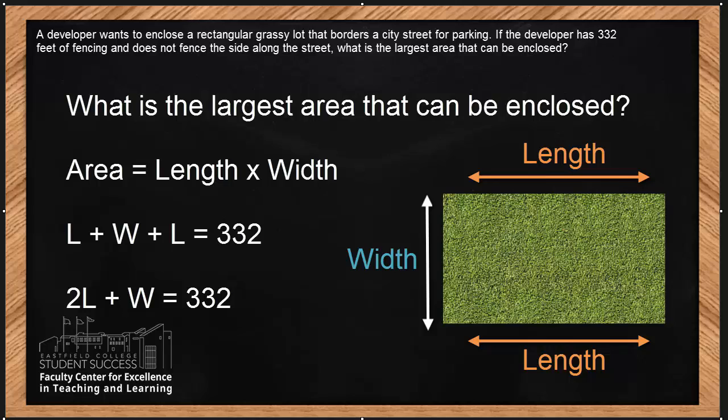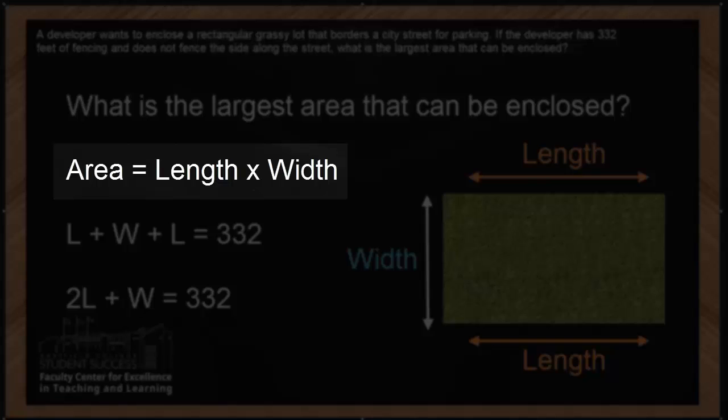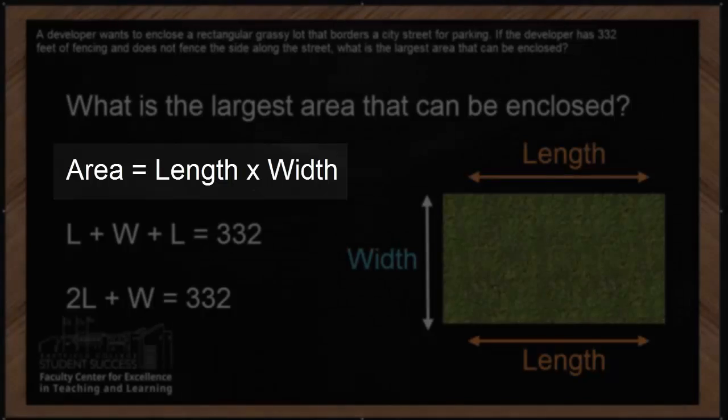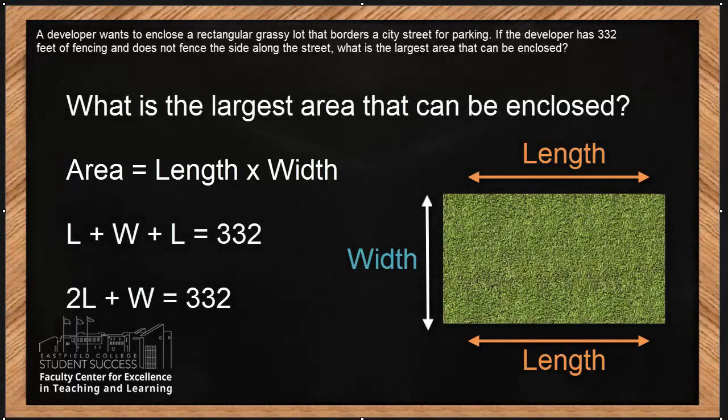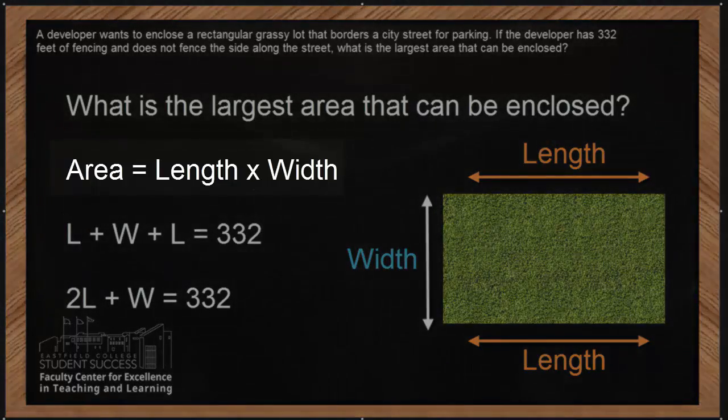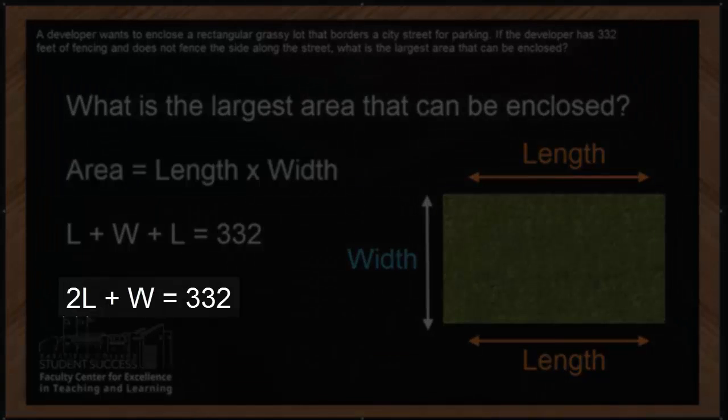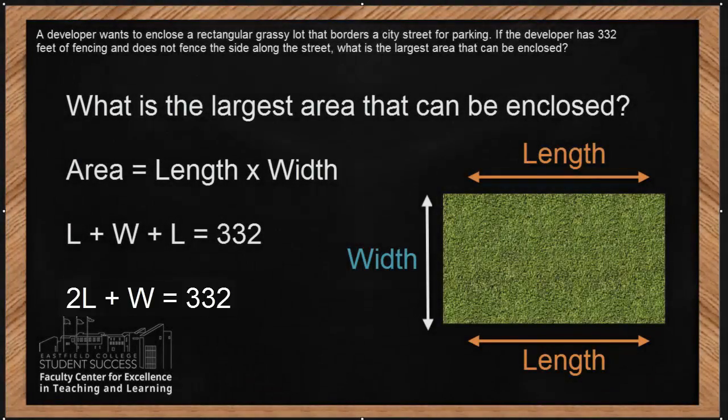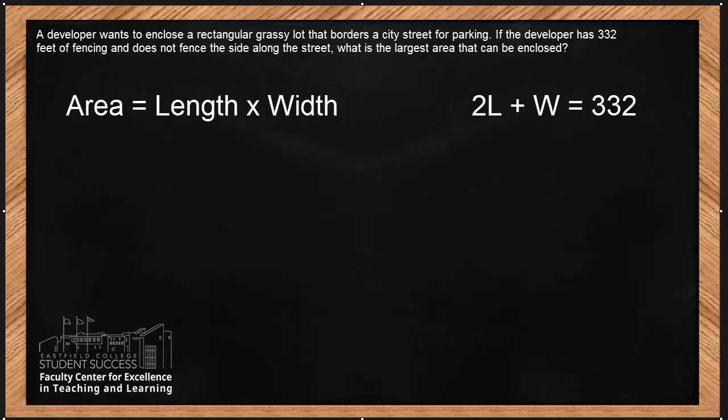Going back and looking at the area, notice how the formula for the area of a rectangle is length times width. This is a two-dimensional area. That means that we're going to be dealing eventually with something that looks like a quadratic function. Further looking, notice that we have the first equation here. When we simplified the second one, it looks like this. So we have now a system of two equations. One of the ways to solve systems of two equations is by substitution. So our next step is going to be solving this system by substitution.